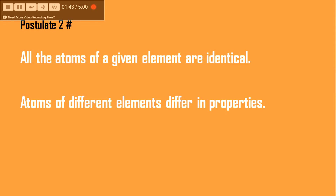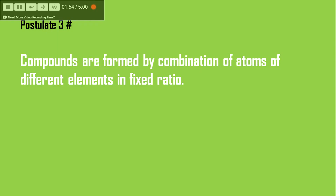While atoms of different elements differ in properties — all the atoms of gold are identical, but they differ from the atoms of silver, iron, or any other element. So all atoms of a given element are identical, and atoms of different elements differ in properties.